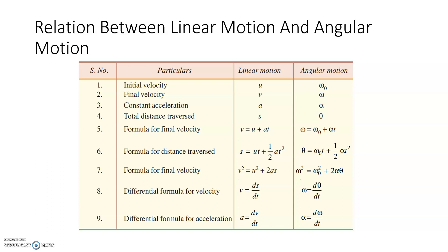Corresponding to linear motion, we have equations for angular motion. Initial angular velocity is represented as ω₀, final velocity as ω, constant angular acceleration as α, and total angle traversed as θ. The equations are: ω = ω₀ + αt, θ = ω₀t + ½αt², ω² = ω₀² + 2αθ, ω = dθ/dt, and α = dω/dt.